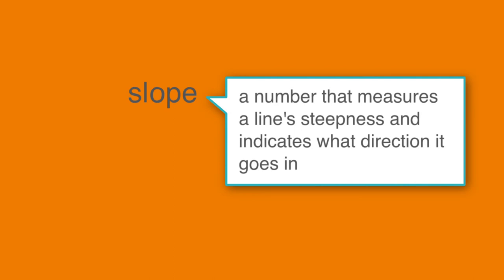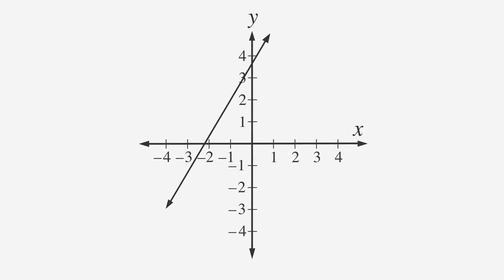First, let's start with some basics. The slope of a line is a number that measures a line's steepness and indicates what direction it goes in. We can visualize this using a coordinate plane like this one. Moving from left to right, if a line goes up the coordinate plane, then the slope is positive.